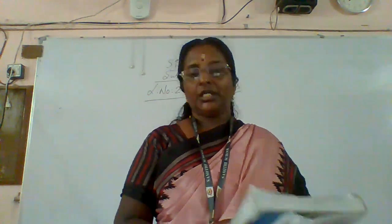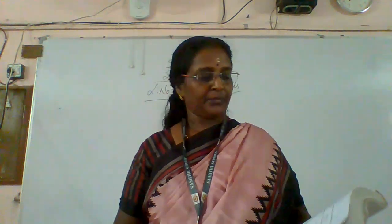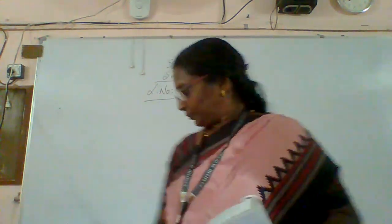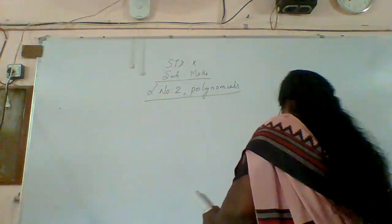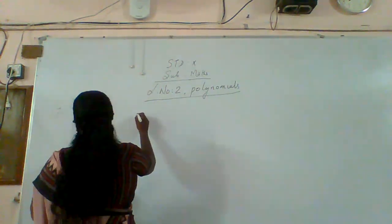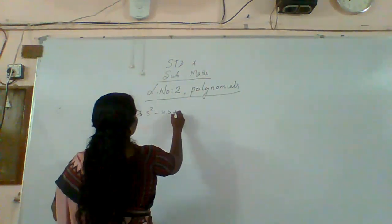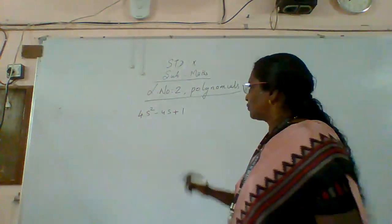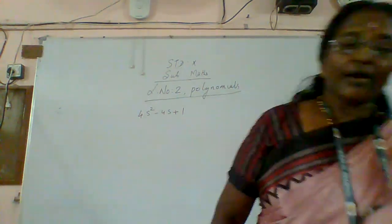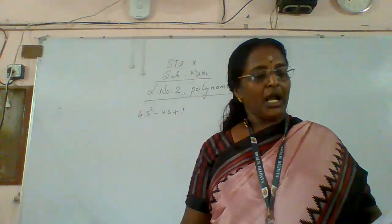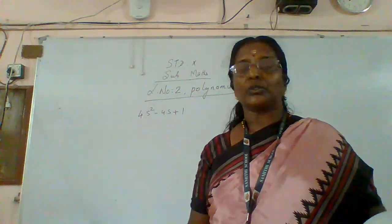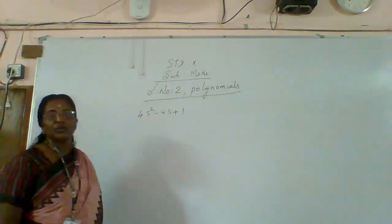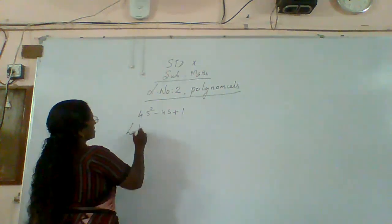Hello, good morning students. We will continue the remaining exercise — Exercise 2.2, we have done the first two sums, now the remaining. So we can work on number two. Four s square minus four s plus one. The question says: find the zeros of the quadratic polynomial and verify the relation between the zeros and coefficients.